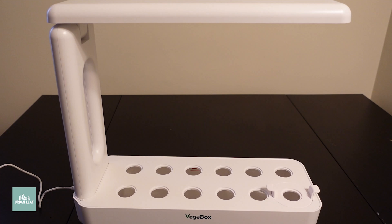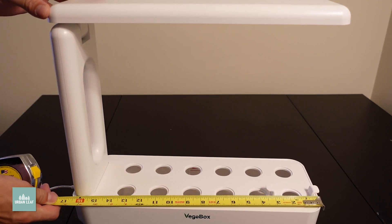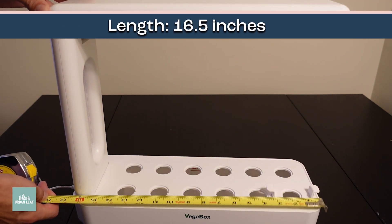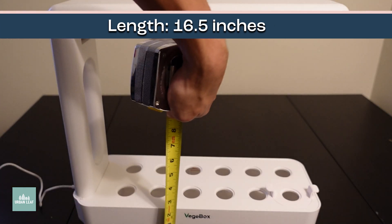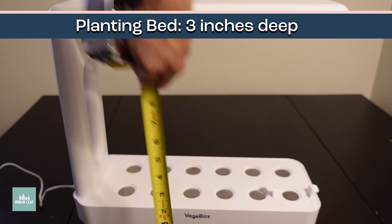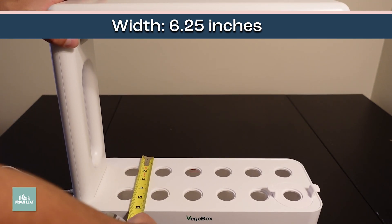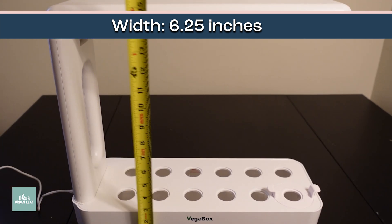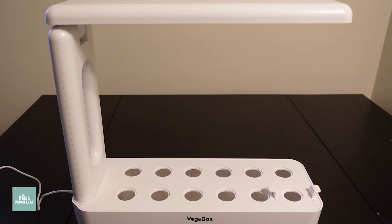Now for a couple measurements on this thing. So, full setup length, about 16 and a half inches, I'd call it 17 to be safe if you're putting it in tight space. The reservoir is about 3 inches deep. The whole unit is about 6 and a quarter inches deep itself. And from bottom to top of the light, about 15, 15 and a half inches.